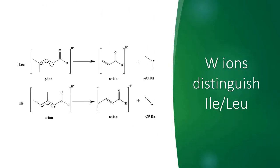Another advantage of using the ETHCD method is to distinguish between isoleucine and leucine. If IL residues are within or near to CDR, wrong assignment may affect antibody protein activity. The principle is that Z ions with leucine or isoleucine on its N-terminus will have different side-chain breakage and form unique W ions. Specifically, leucine on the N-terminus can lose a 43-dalton isopropyl radical.